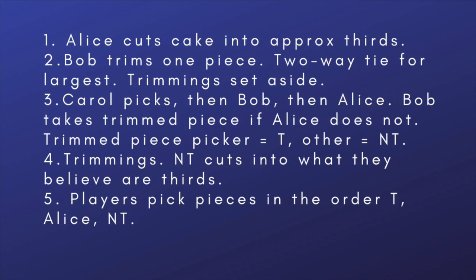Bob has to take a trimmed piece if Carol does not. Call the person who took the trimmed piece T, and the other of Bob and Carol, NT. Four, to deal with the trimmings, NT cuts them into what she thinks are thirds. Five, the players pick pieces in the order T, Alice, NT. The key to the success of the Selfridge-Conway strategy is that for the trimmings, Alice has an irrevocable advantage with respect to T, since Alice will never envy T even if T gets all the trimmings. So Alice can pick after T and allow the method to end in a finite number of steps.